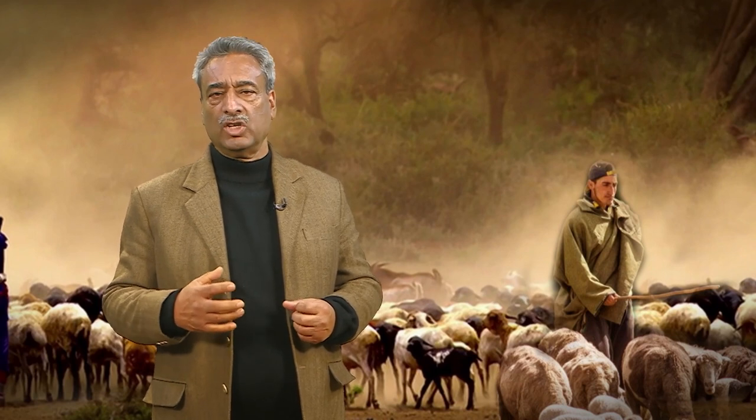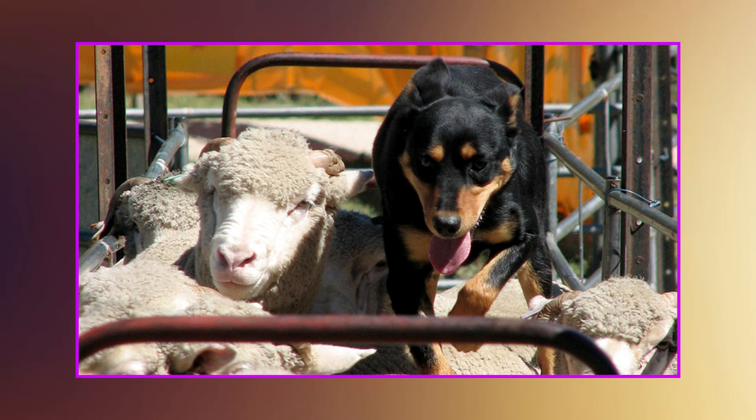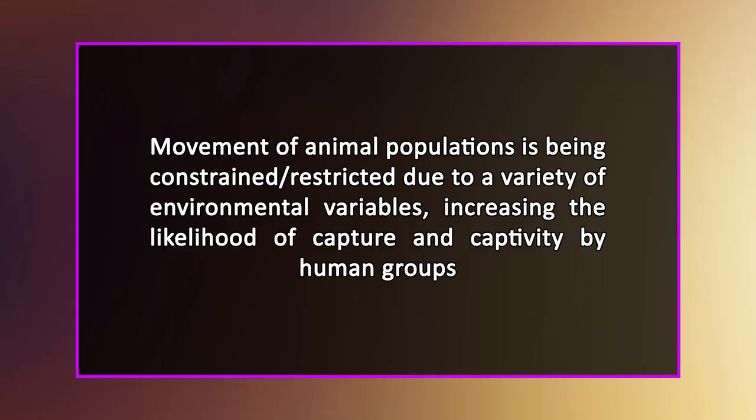This approach protected younger individuals and female reproductive members so that this source of nourishment would not run dry. The accidental capture of a few younger animals, as well as the expertise gained in taming them, indicated an entirely new way of living based on the steady supply of animal food. This would have resulted in a greater degree of mutual dependence between people and animals. Three main factors in the lifestyle of hunter-gatherers would have helped domestication of animals begin as a regular practice.